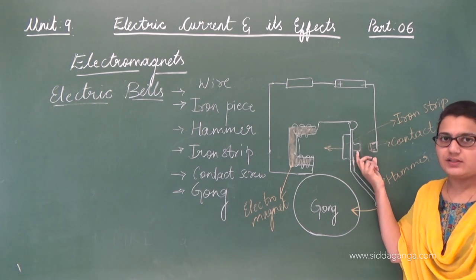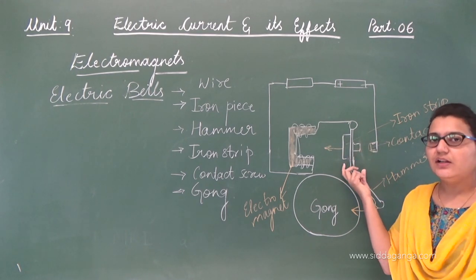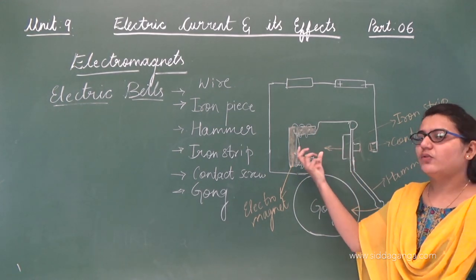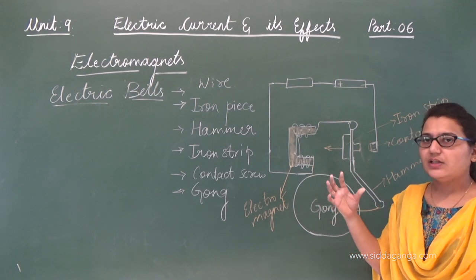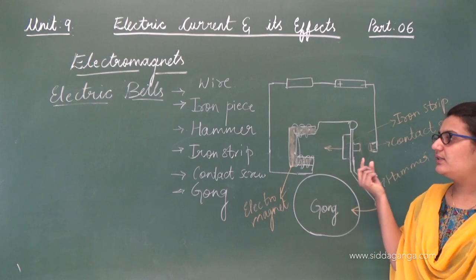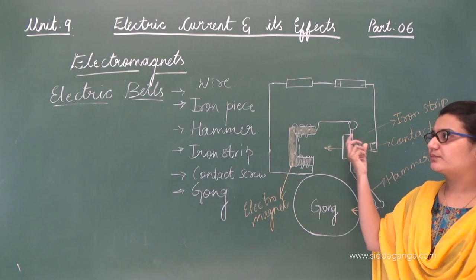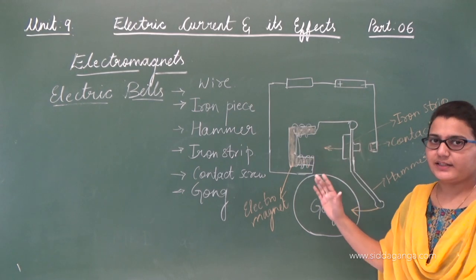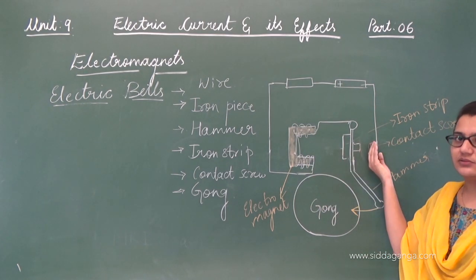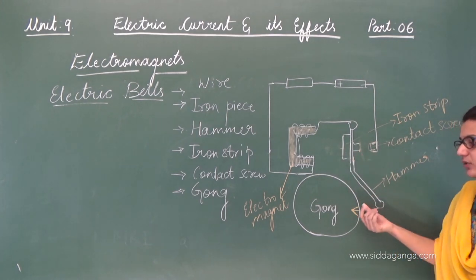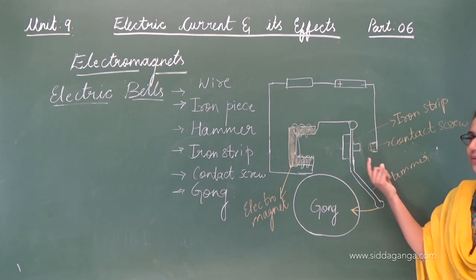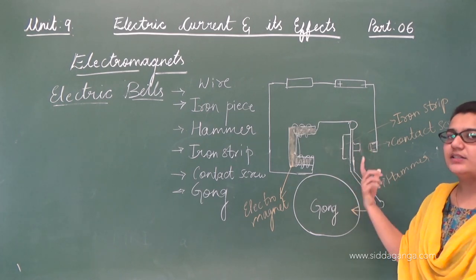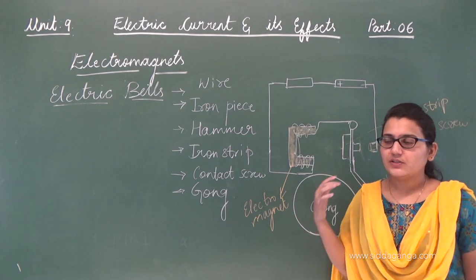When there is no current, the electromagnet stops working because the magnetic field is only created when current is passed. Since the circuit is now open, there is no current and no magnetic field. So the iron strip is no longer attracted and moves back to its original position. When it moves back, the contact is restored, the circuit becomes closed again, current flows again, and the whole process repeats.